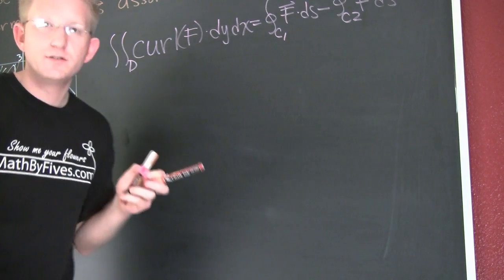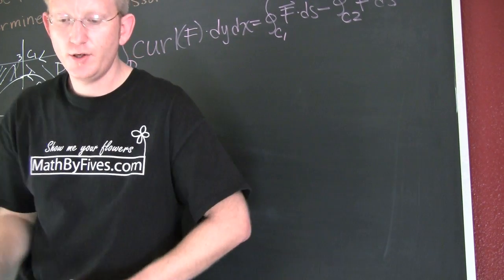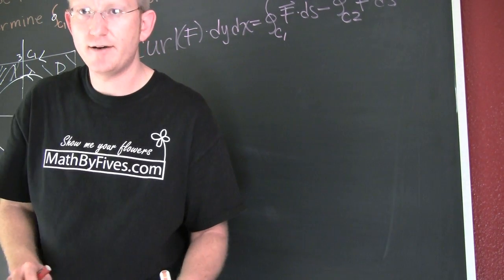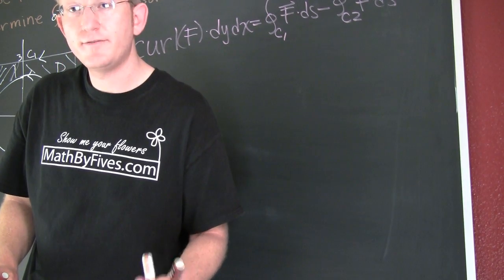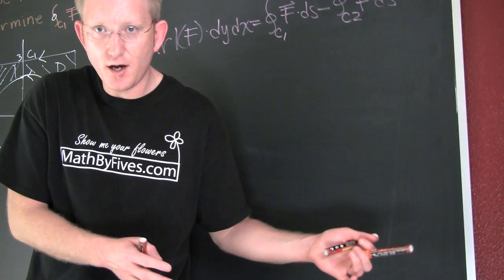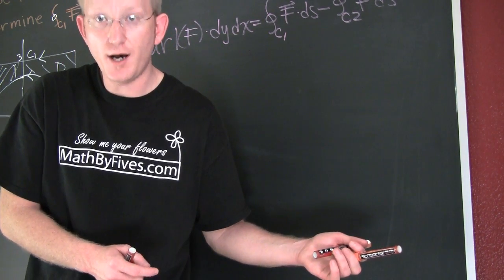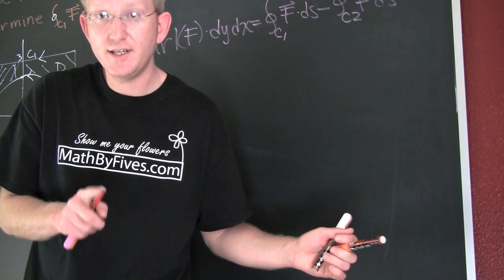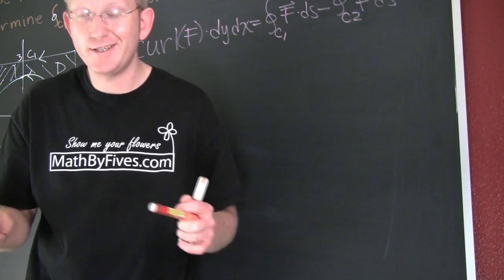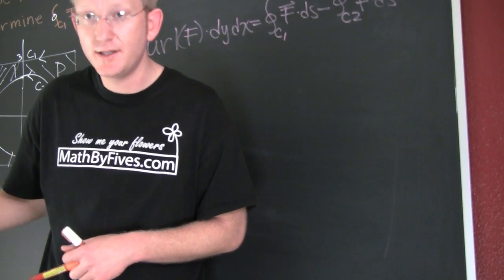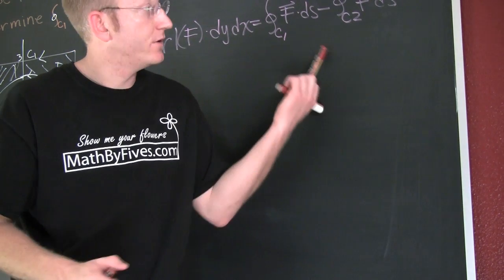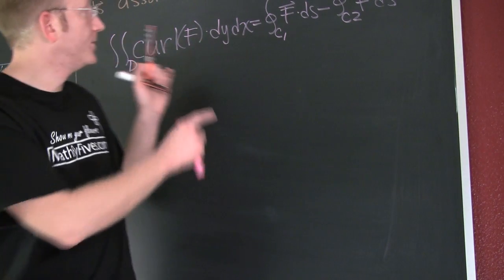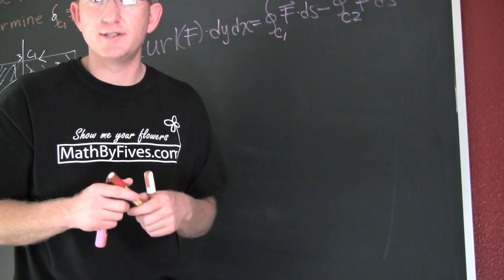So we know this is true because if we are walking along the path to the left, if the region D is on our left, then that's the positive line integral. But if the region that we're integrating over D is on our right, then that's the negative contribution to the entire integral using Green's Theorem.